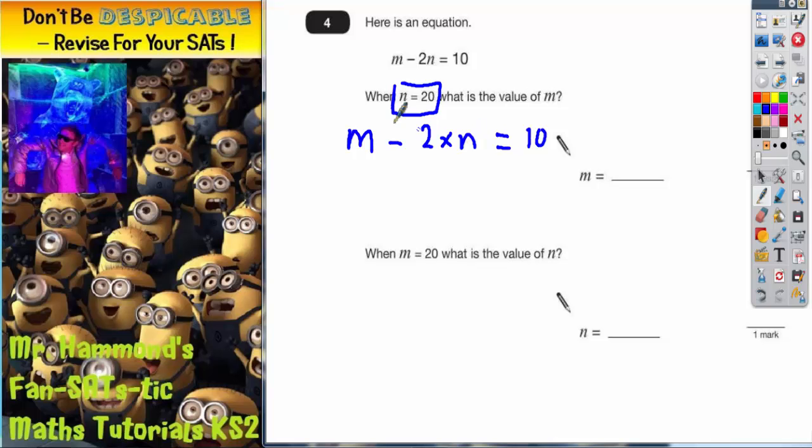Now we're going to substitute or replace the n, which is 20, into this equation. So we've got m take away 2 lots of 20 because n is 20, and that is still equal to 10.